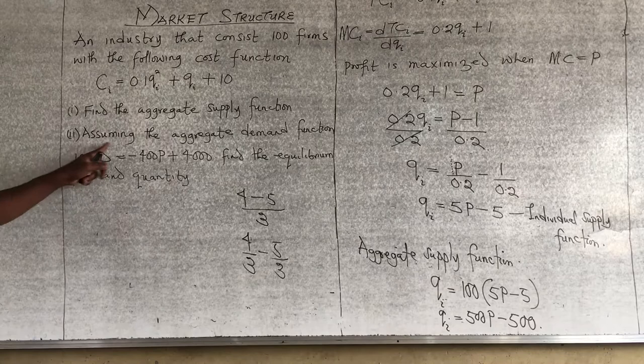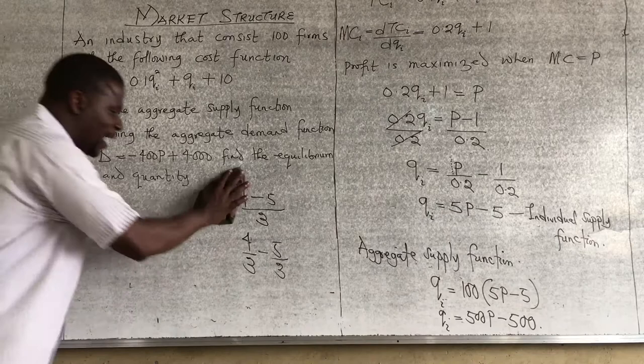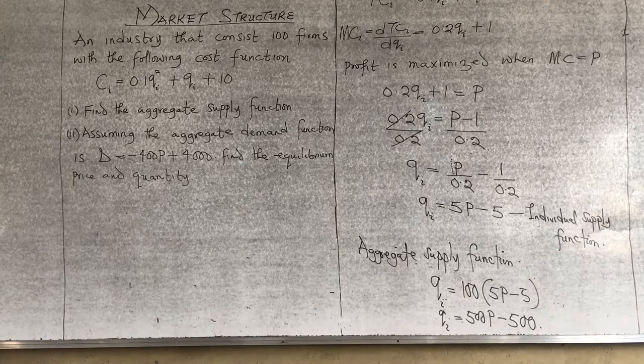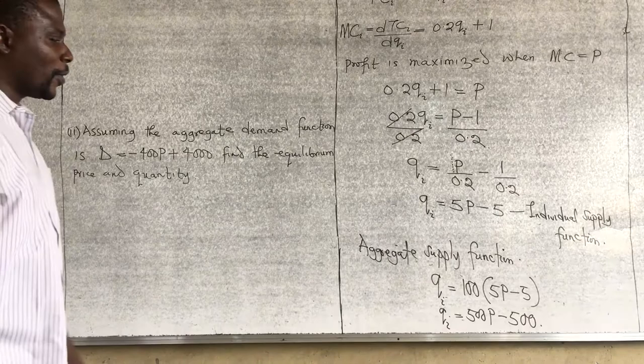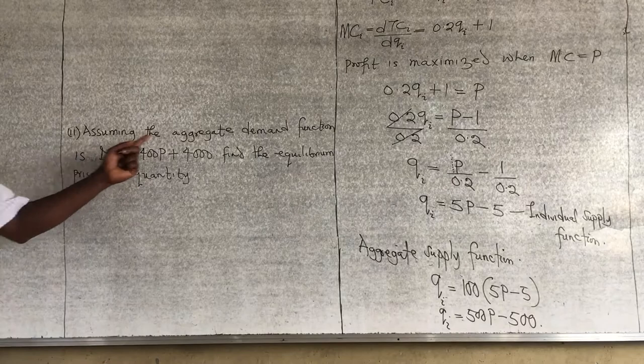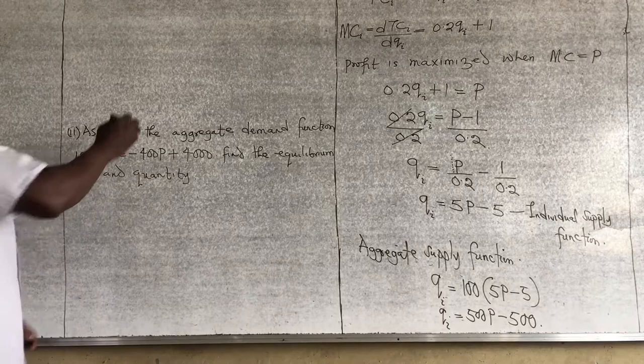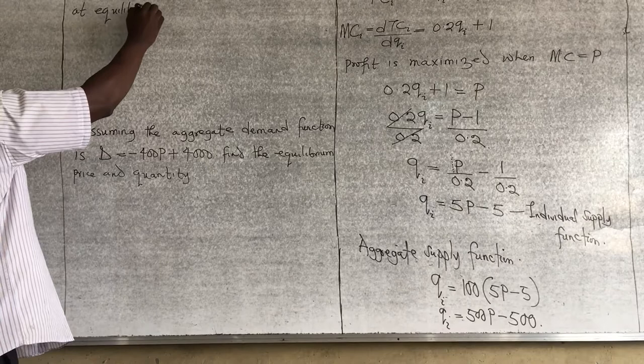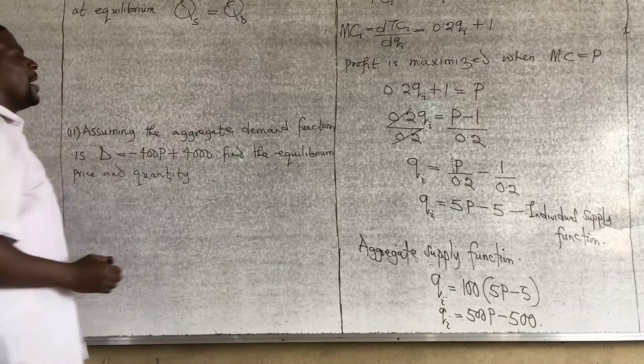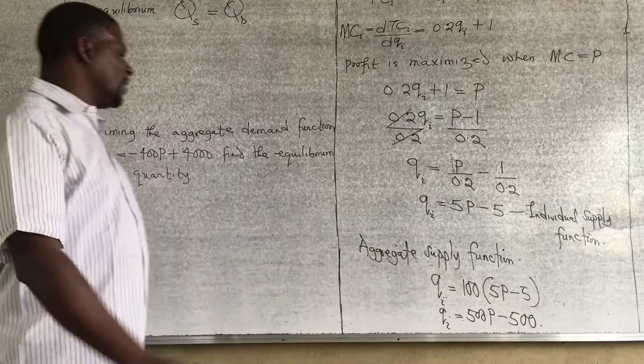Assuming the aggregate demand function is given, find the equilibrium price and quantity. Don't forget that at equilibrium, quantity supplied is always equal to quantity demanded. Since we know our aggregate supply and aggregate demand, let's equate the two.